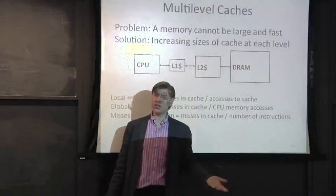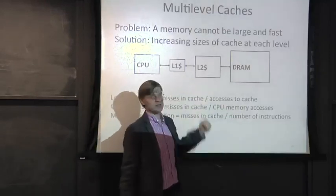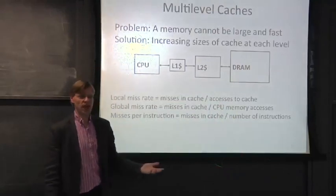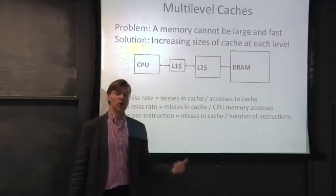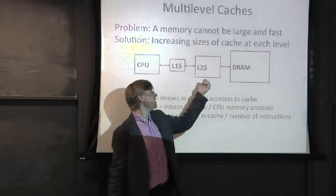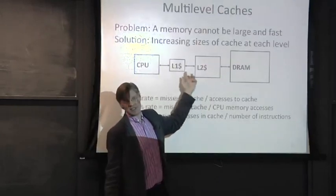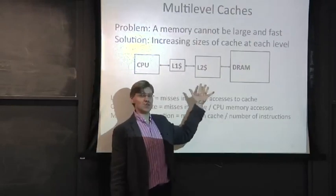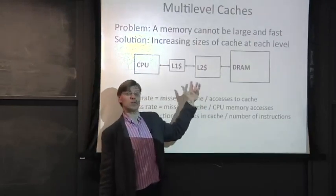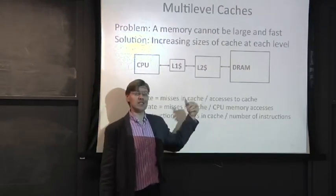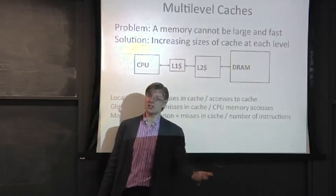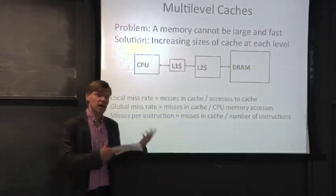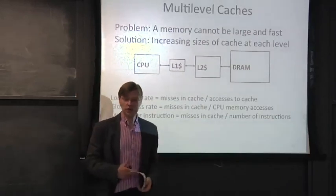Conversely, if the level two has a very high miss rate, you might think it's doing a bad job. But to some extent, all of the easy misses are being filtered by the level one cache. So the miss rate out of your level two cache might look very different from what you'd expect, and we need correct nomenclature to discuss these different misses.